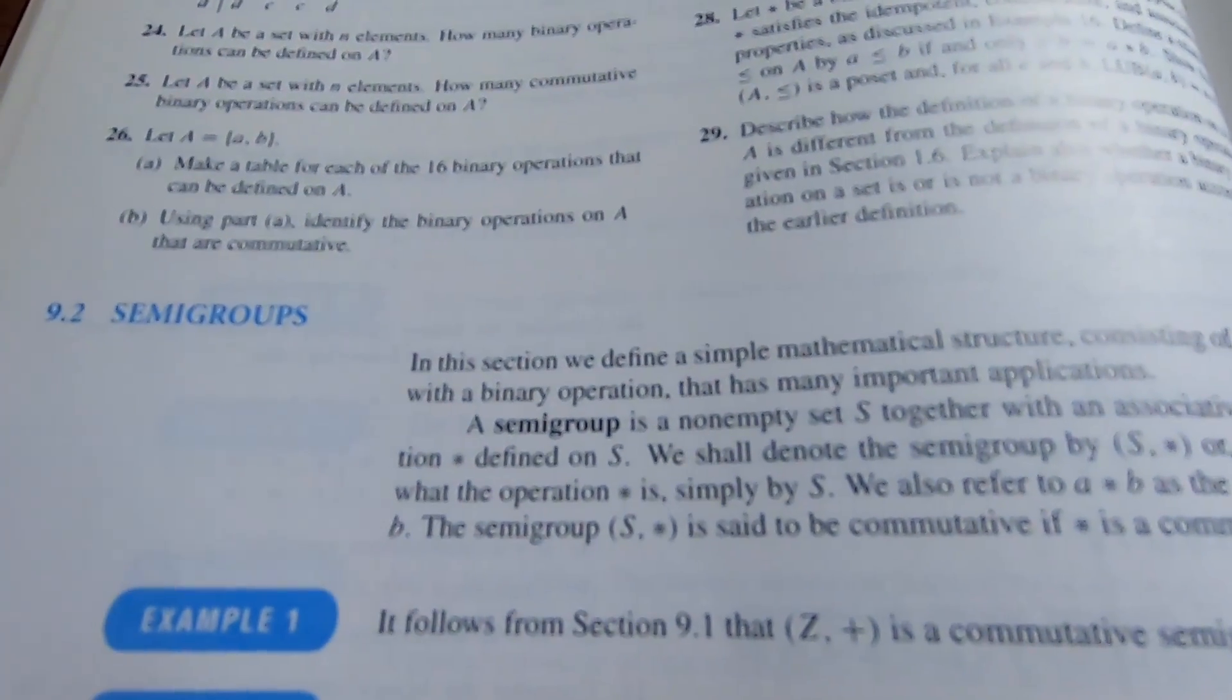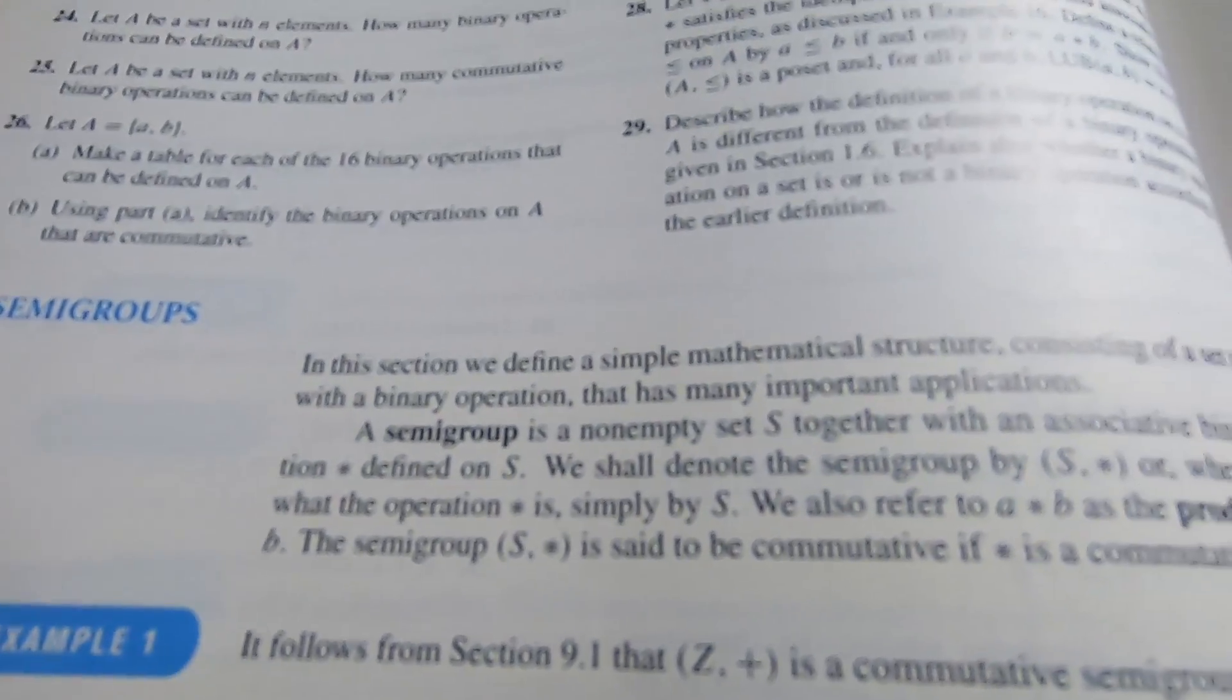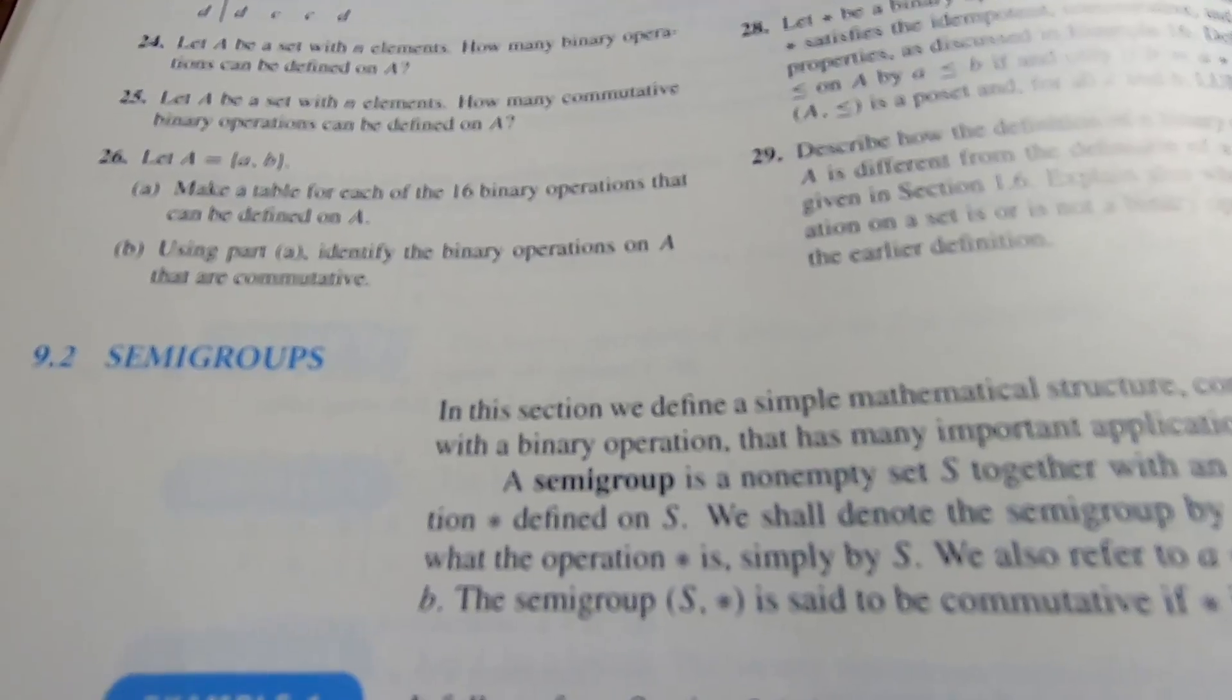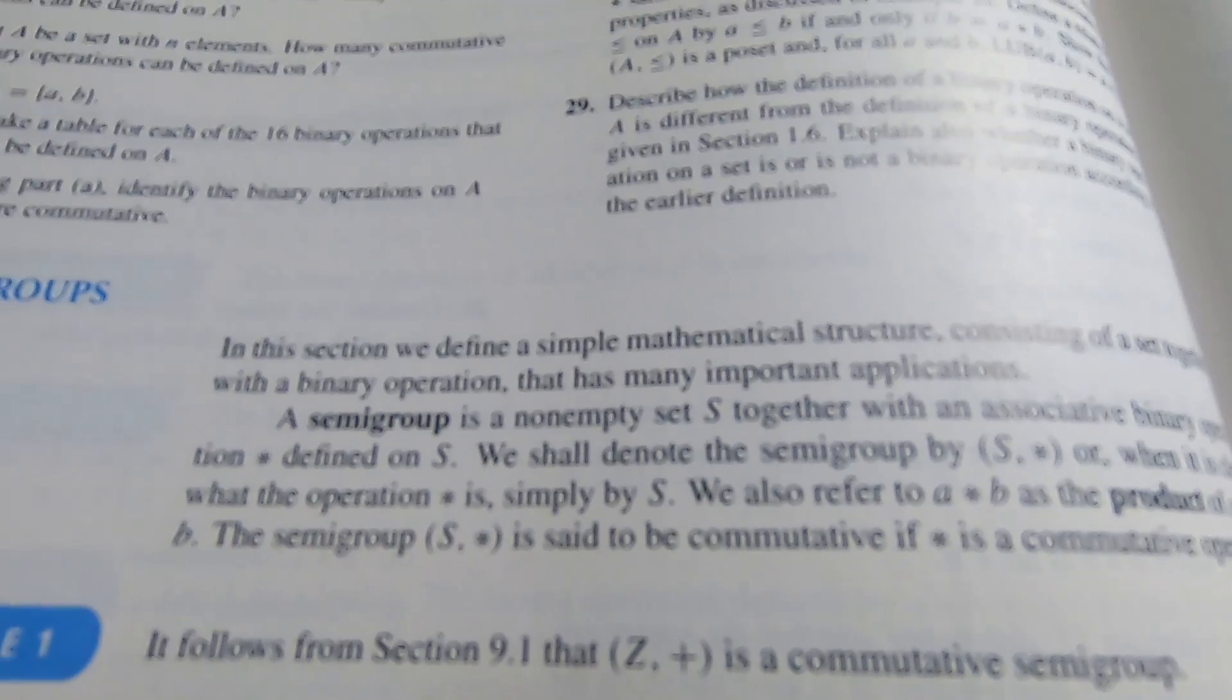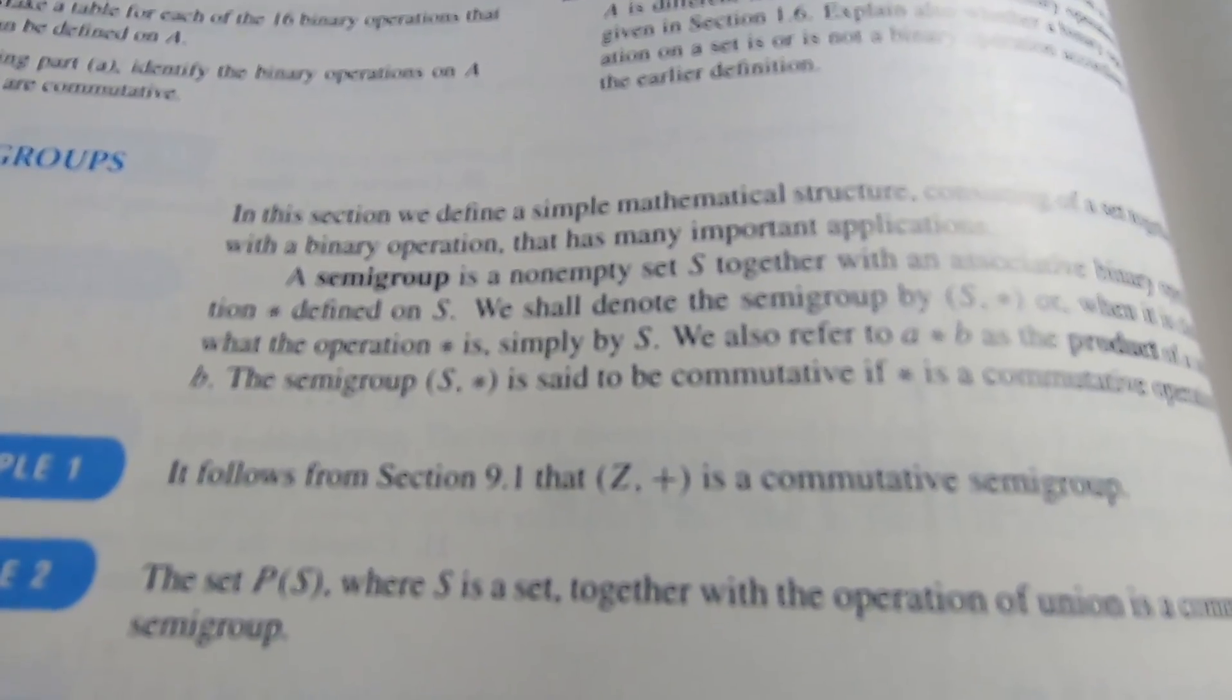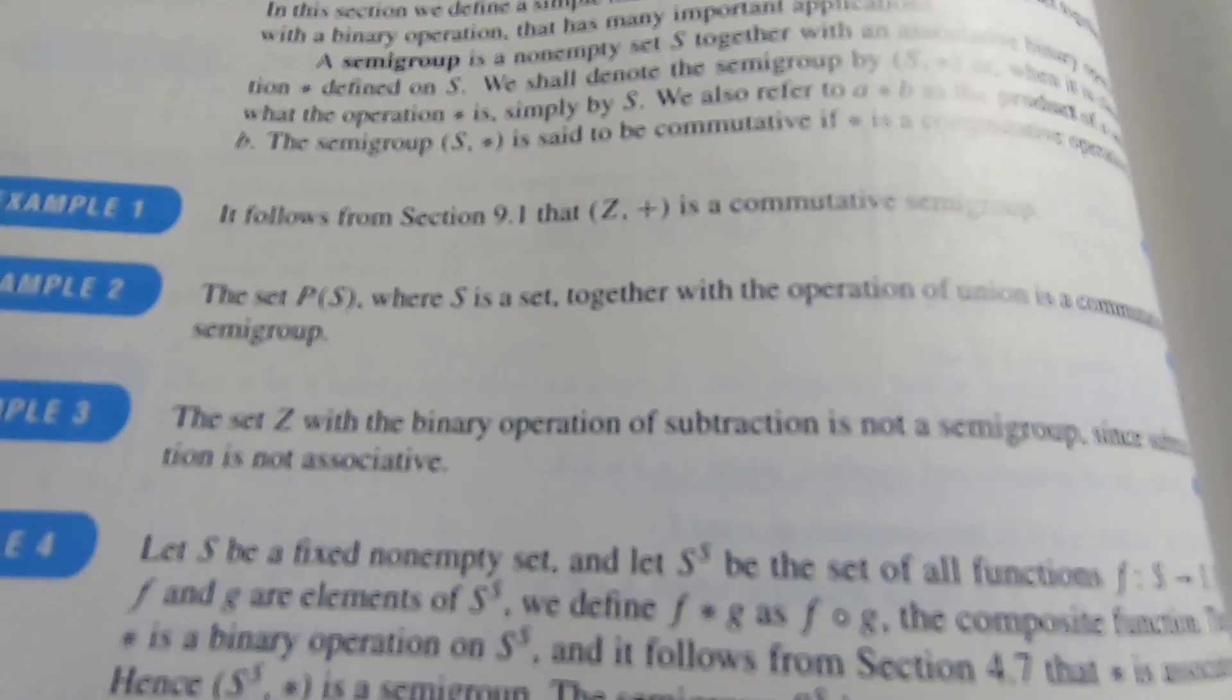This is the section on semi-groups, which might be a topic that you actually don't study if you ever take discrete math. But me being the algebra junkie that I am, I've read this entire section. I'm really happy that the authors chose to include this because I enjoyed reading it and it goes through and explains everything quite nicely. It's well-written and it's a really good book.